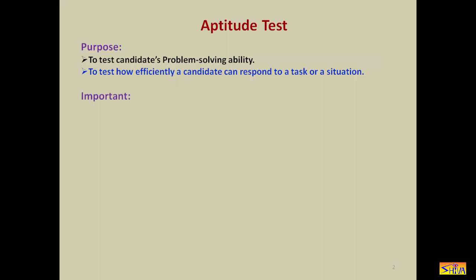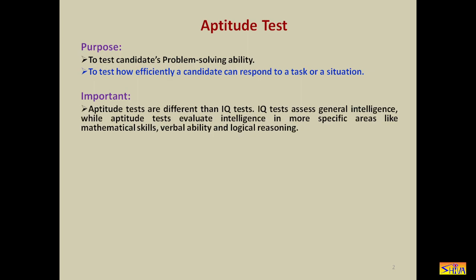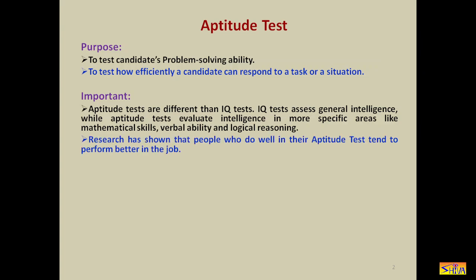Now, a few important points about the aptitude test. Number one: aptitude tests are different from IQ tests, that is intelligence quotient tests. IQ tests assess general intelligence, while aptitude tests evaluate intelligence in more specific areas like mathematical skills, verbal ability, and logical reasoning. Research has shown that people who do well in their aptitude test tend to perform better on the job. That is why all industries and companies conduct the aptitude test.